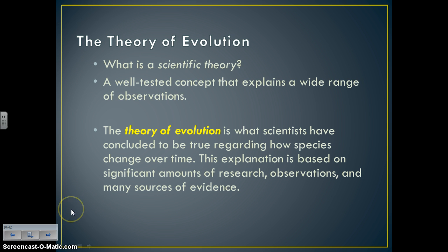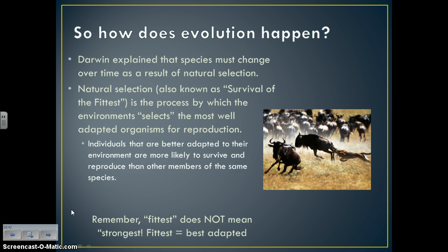If something arose to change this idea, we would revise our concept of the theory of evolution, just as we would revise the theory of gravity if an apple floated upward. So now that we've introduced evolution, how does it actually happen? Darwin explained that a species must change over time as a result of natural selection.